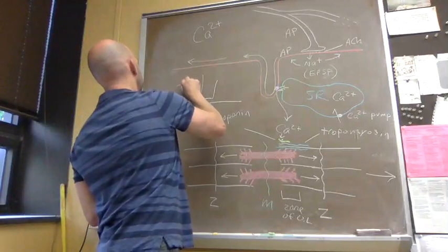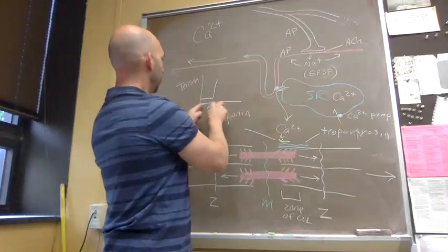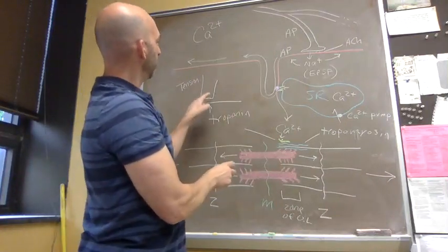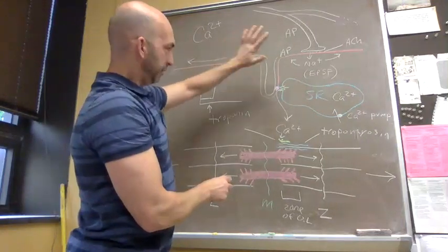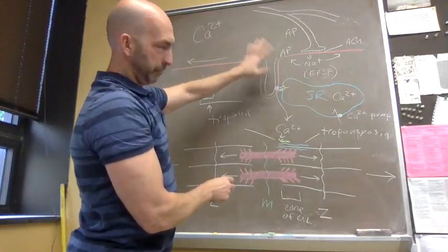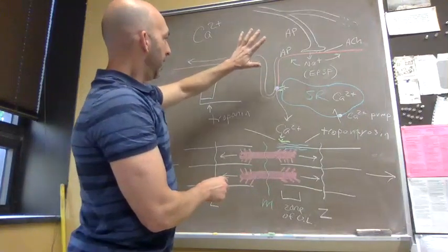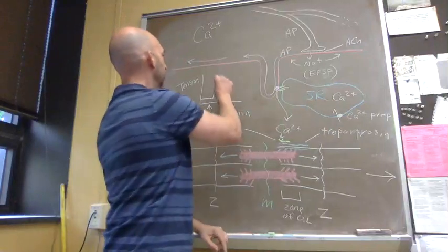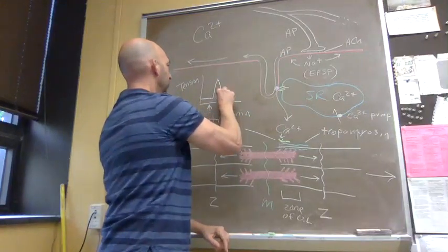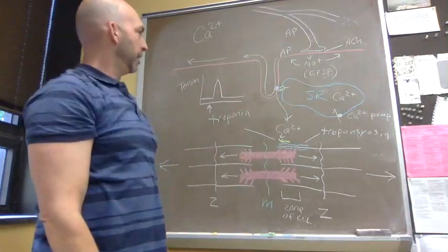We can say tension or force—same thing. This is time on our x-axis, and we would get our twitch where we develop tension. Then the action potential repolarizes, and after the action potential is over and our calcium release stops and our calcium is pumped in, we would lose tension and it will come back down to resting tension. Then we're done; we have a twitch.